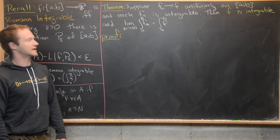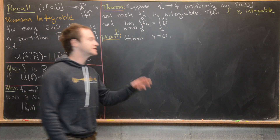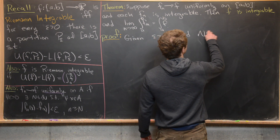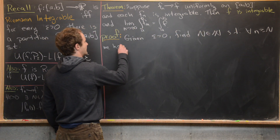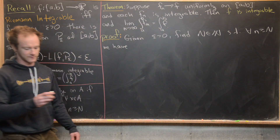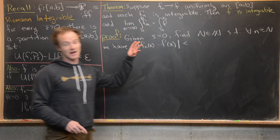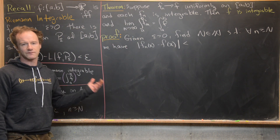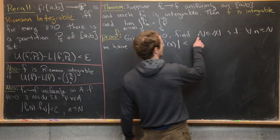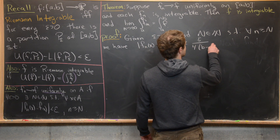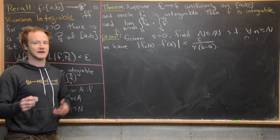Let's get to the proof of integrability. Given ε > 0, we first find a natural number N such that for all n ≥ N we have |f_n(x) − f(x)| < ε / (4(B − A)). It's not immediately clear why we want it that small, but it will be once we go through the arithmetic.